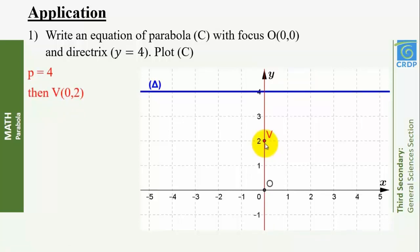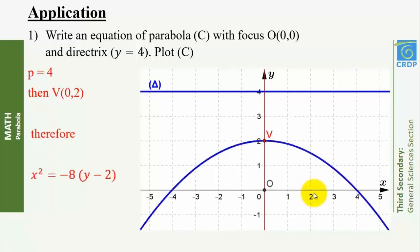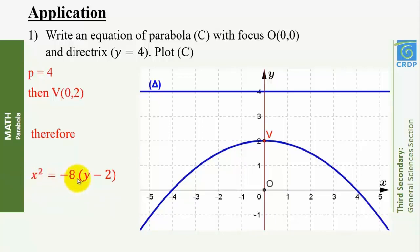Since the focus is always inside the parabola, C opens downwards. Therefore the equation of C is of the form (x − xV)² = −2P(y − yV). Hence the equation of C is x² = −8(y − 2).